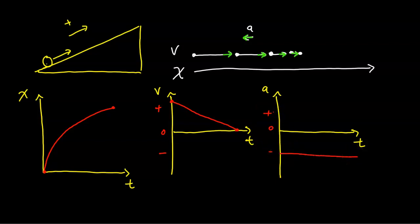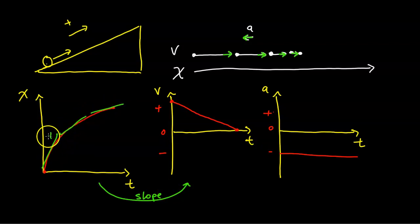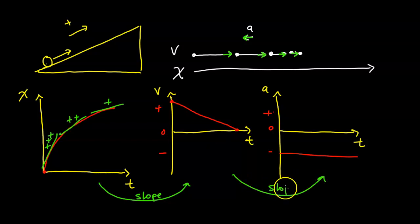Once again, notice that the slope of the position graph tells us the velocity. If you draw tangent lines, the first is very steep — three positives — then two positives, then one positive. It's getting less and less steep, so the velocity is decreasing to zero, flattening out. From the velocity graph, the slope of the velocity graph tells us the acceleration. Since this slope is a negative slope, the acceleration will be a negative constant acceleration.